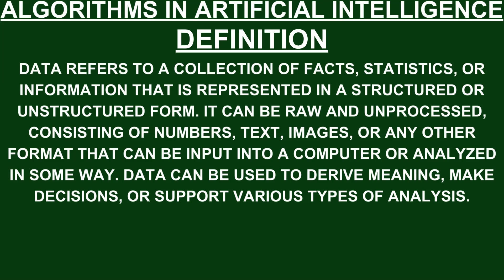The definition of algorithms. Data refers to a collection of facts, statistics or information that is represented in a structured or unstructured form. It can be raw and unprocessed, consisting of numbers, text, images or any other format that can be input into a computer or analyzed in some way. Data can be used to derive meaning.